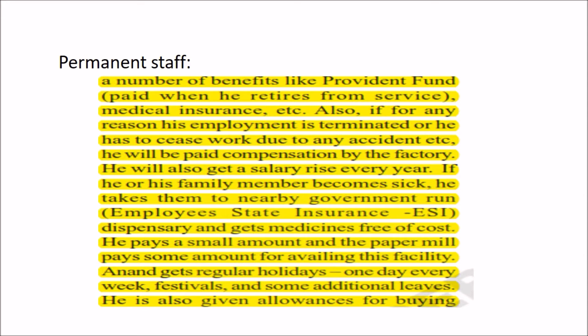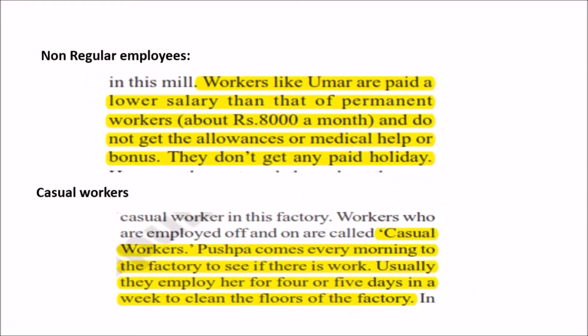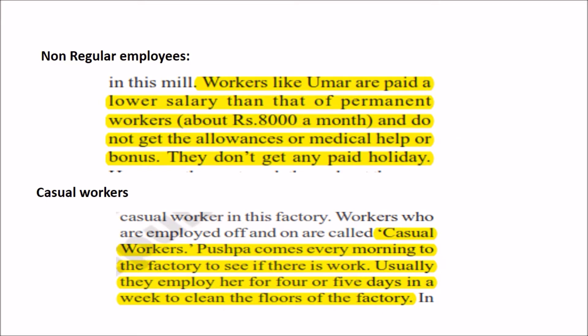Non-regular employees like Umar are paid very less salary — just 8,000 rupees per month — compared to permanent workers. They do not get any allowances, medical help, provident fund, or other benefits, and they have no paid holidays. Casual workers like Pushpa come every morning to the factory to see if there is any work, and are typically employed for five days to clean the floors. They also do not receive any of the benefits that permanent employees get.